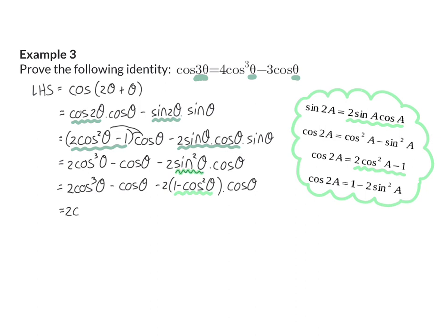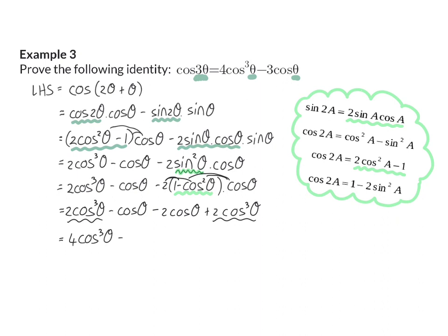My first two terms stay as they were. In the last term, the 2 and cos θ are multiplied in, giving minus 2 cos θ plus 2 cos³ θ. Now I have like terms that I can add up, giving 4 cos³ θ minus 3 cos θ, which is my right-hand side. There are many different ways to prove the same identity — sometimes you can even work on both the left-hand side and the right-hand side until they both equal the same expression.